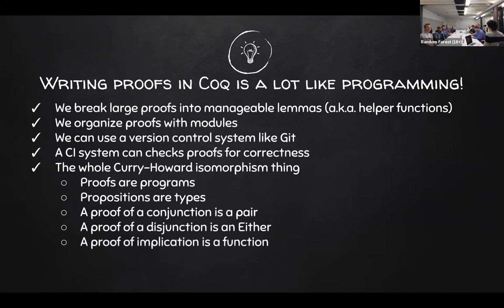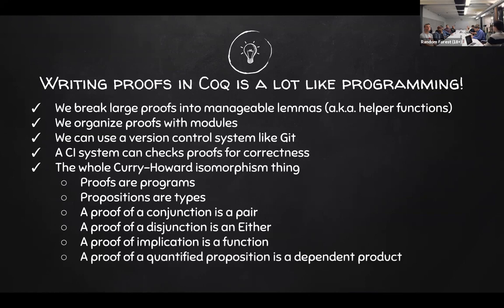If you want to prove that A implies B — that's an implication — that's really just a function that takes a proof of A and transforms it into a proof of B. And if you want to prove some quantified proposition like 'for all X, something of X,' in programming that's a dependent type. Most programming languages don't have dependent types, including Haskell — Haskell doesn't have dependent types yet. There's some work ongoing to make that a reality, but it hasn't landed yet.